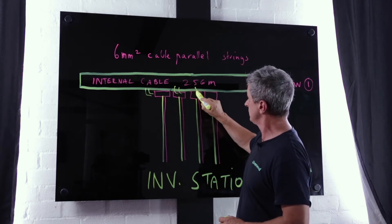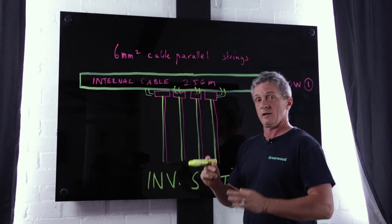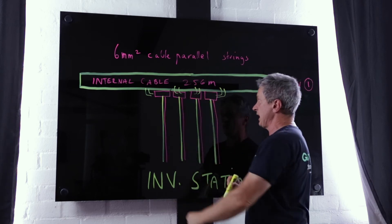We've obviously reduced our long cable run. Remember that cable run all the way to inverter station is 133 meters.